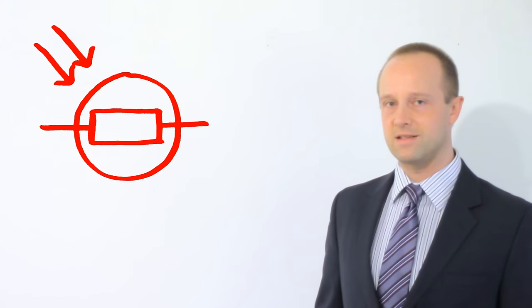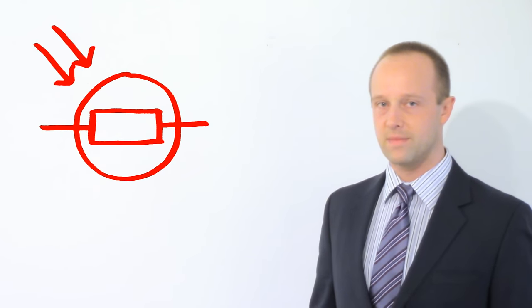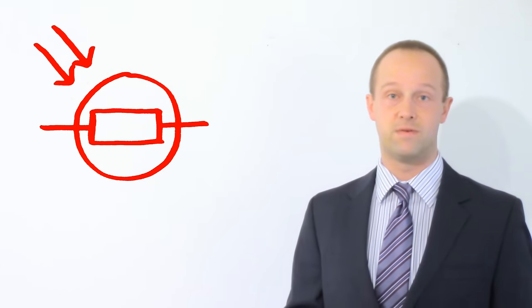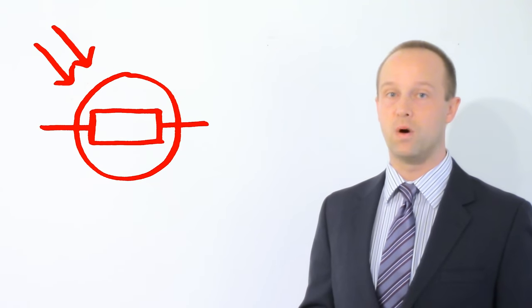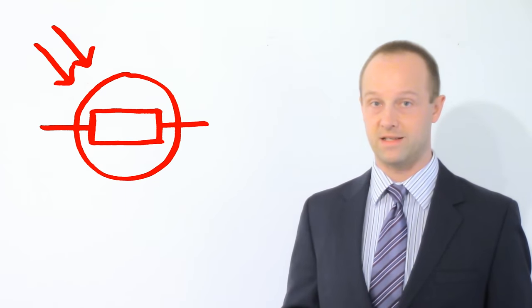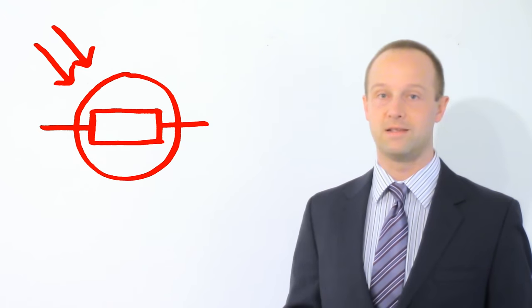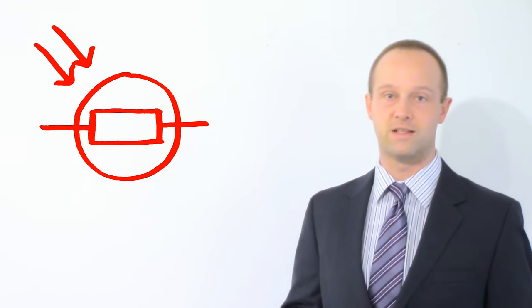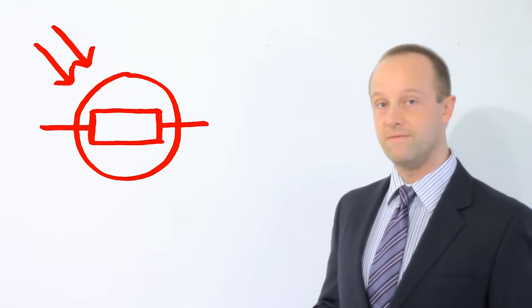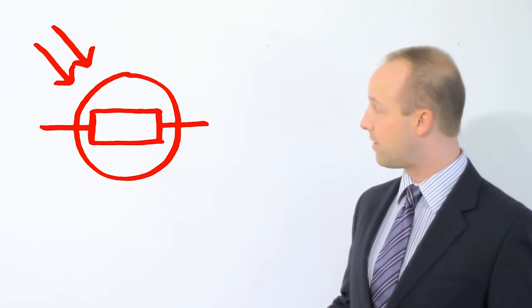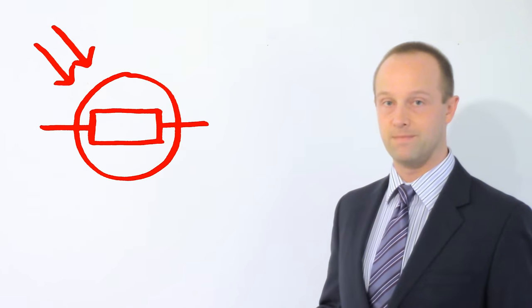Very similar to that is this component. Now, this is another type of resistor, and it's the final type of resistor we're going to look at, but this one depends on how much light is hitting it. We call it a light-dependent resistor, or LDR for short. This symbol represents the light falling on this surface. Those two arrows represent the light hitting it.